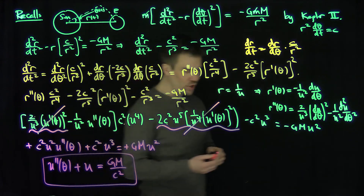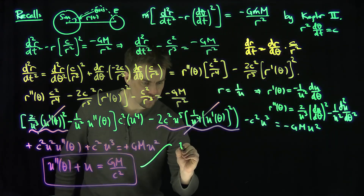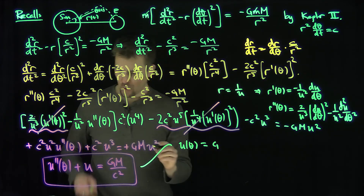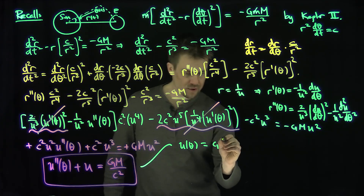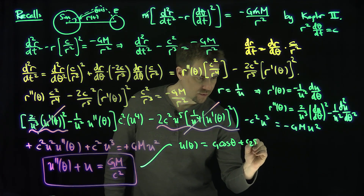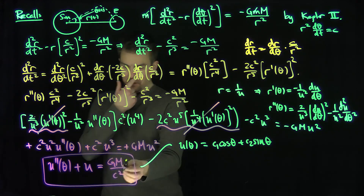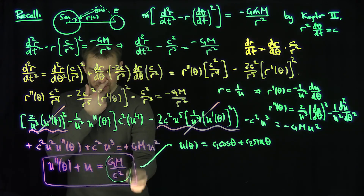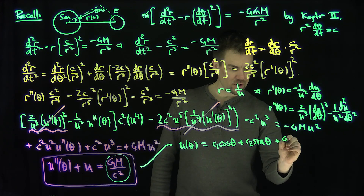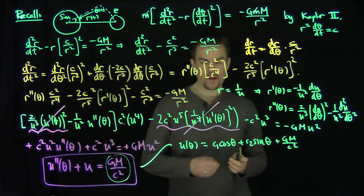The solution is u(θ) equals c₁ cosine θ plus c₂ sine θ, from the homogeneous part, plus Gm over c squared as a particular solution — which is clearly a constant particular solution.